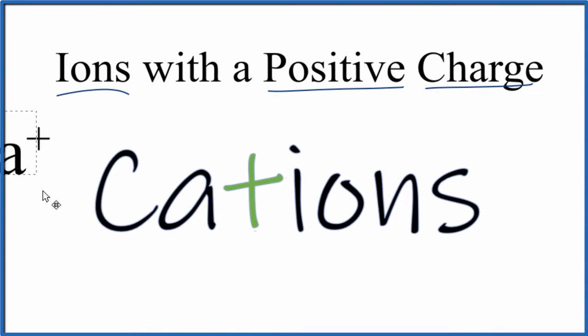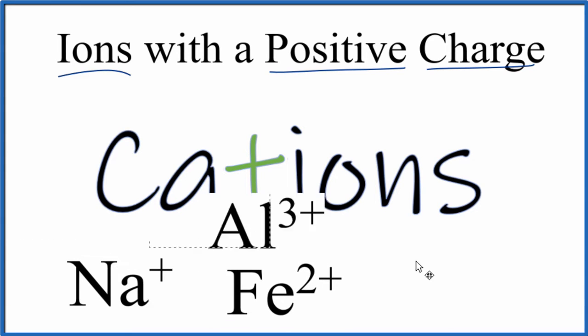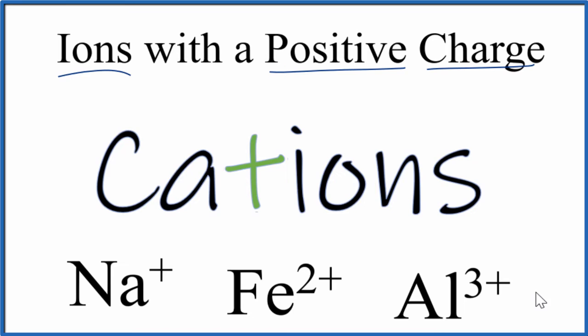Some examples of cations would be the sodium ion, Na+, or the iron 2 ion, Fe2+, or even aluminum, Al3+. They all have a positive charge. What that means is the positive charge tells you how many electrons they've lost or transferred when they formed bonds. Sodium, 1. Iron 2 has transferred or lost 2 electrons, and aluminum would have 3.